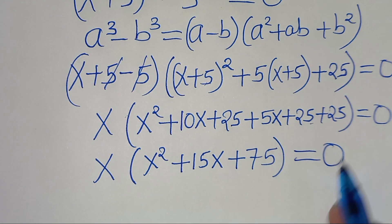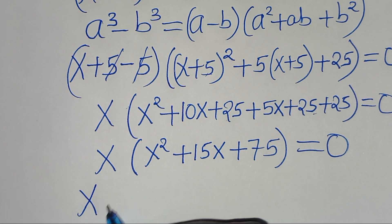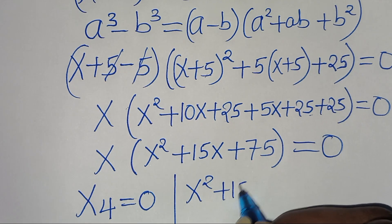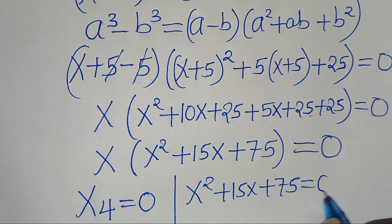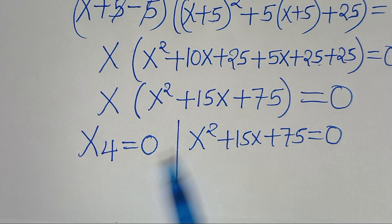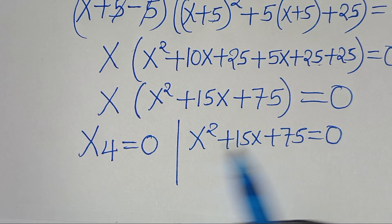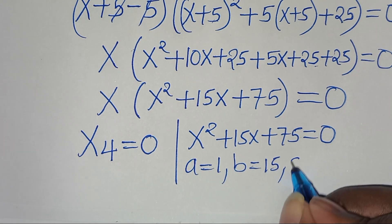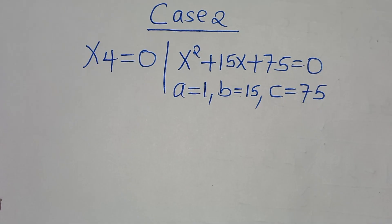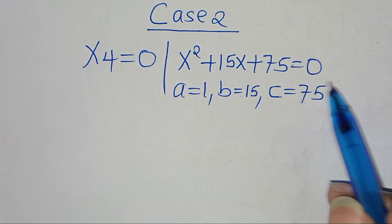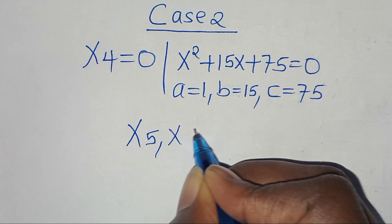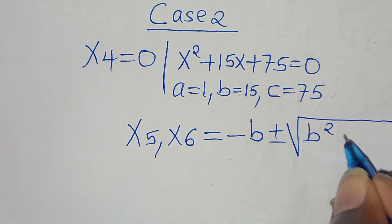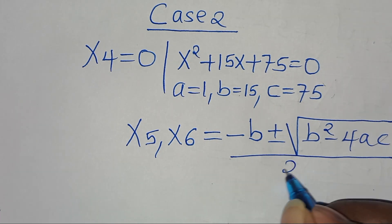We have two parts: x4 equals 0, and x squared plus 15x plus 75 equals 0. We solve for x5 and x6 from this quadratic equation, where a equals 1, b equals 15, and c equals 75. Applying the quadratic formula: minus b plus or minus the square root of b squared minus 4ac, divided by 2 times a.